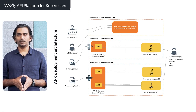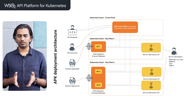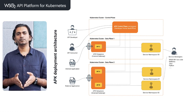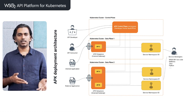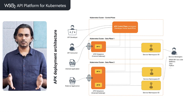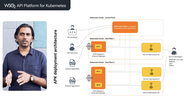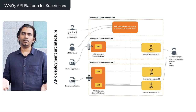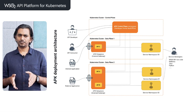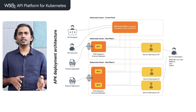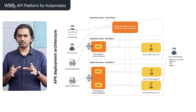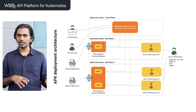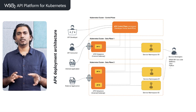In WSO2 APK, we have architecture that supports both of these deployment scenarios. When you have a large number of API requests, you can configure horizontal pod autoscaling in the Kubernetes environment to scale the system. And when you have a large number of APIs, you can easily use our API gateway partitioning concept to deploy a large number of APIs within the system. APK is designed to run as a microservices architecture, which allows us to scale these things independently.